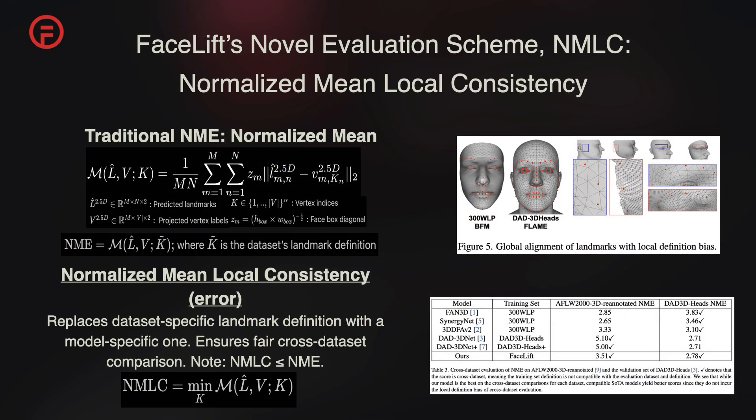Previous methods compare using the normalized mean error metric, which assumes a fixed set of vertex indices of a face mesh as the landmark definition. While global alignment is shared across datasets, each dataset has its own local definition bias, as can be seen on the right. Since our landmark definition varies, for the purpose of fair evaluations, we consider a model-specific definition as a normalized mean consistency error metric to adjust for the local definition bias, by enabling each model to select the vertex indices which minimize its normalized mean error across the evaluation set.